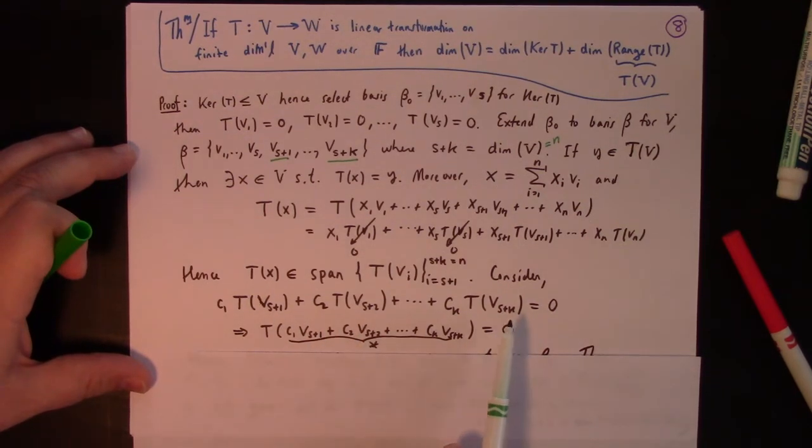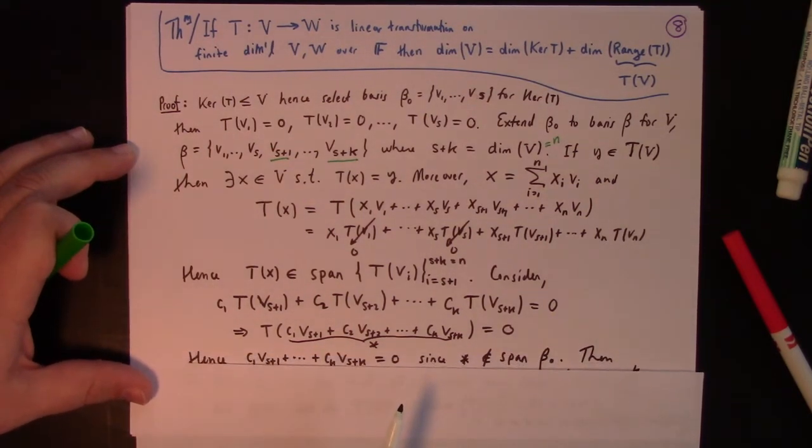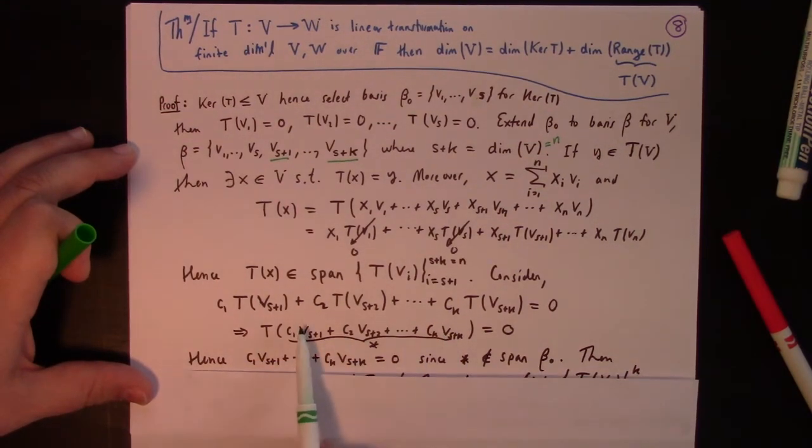So again, using linearity, I combine this linear combination to an image of the linear combination. Let's call it star. And then the thing is, if star was non-zero, that would be trouble because then that would mean that this was in the kernel and it wasn't zero.